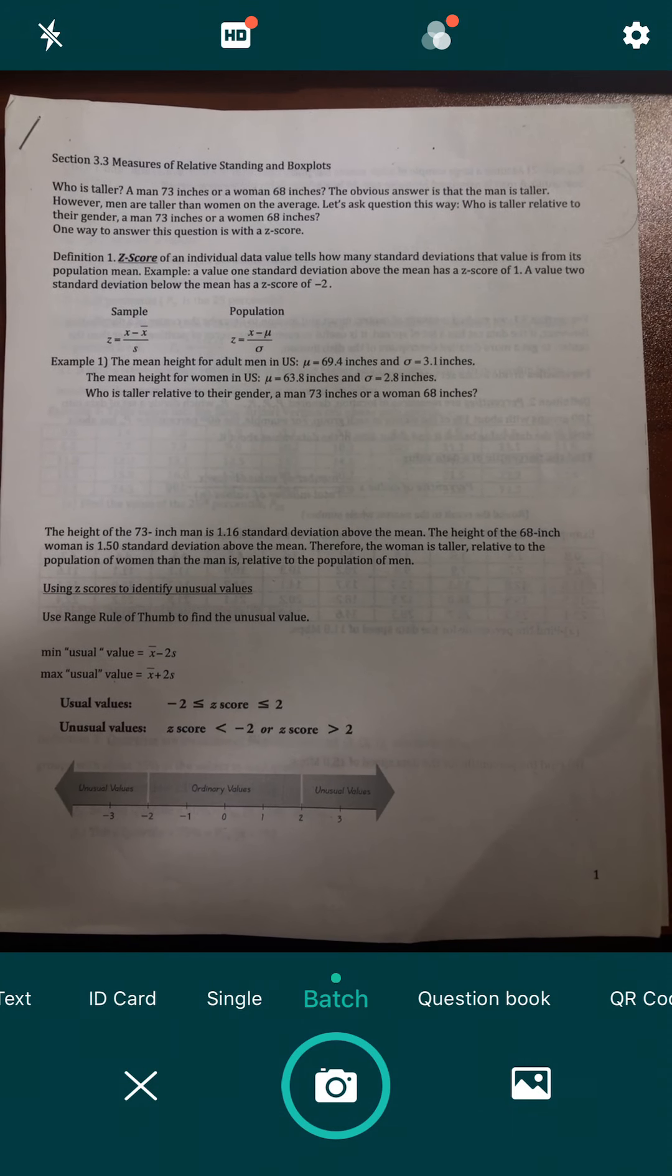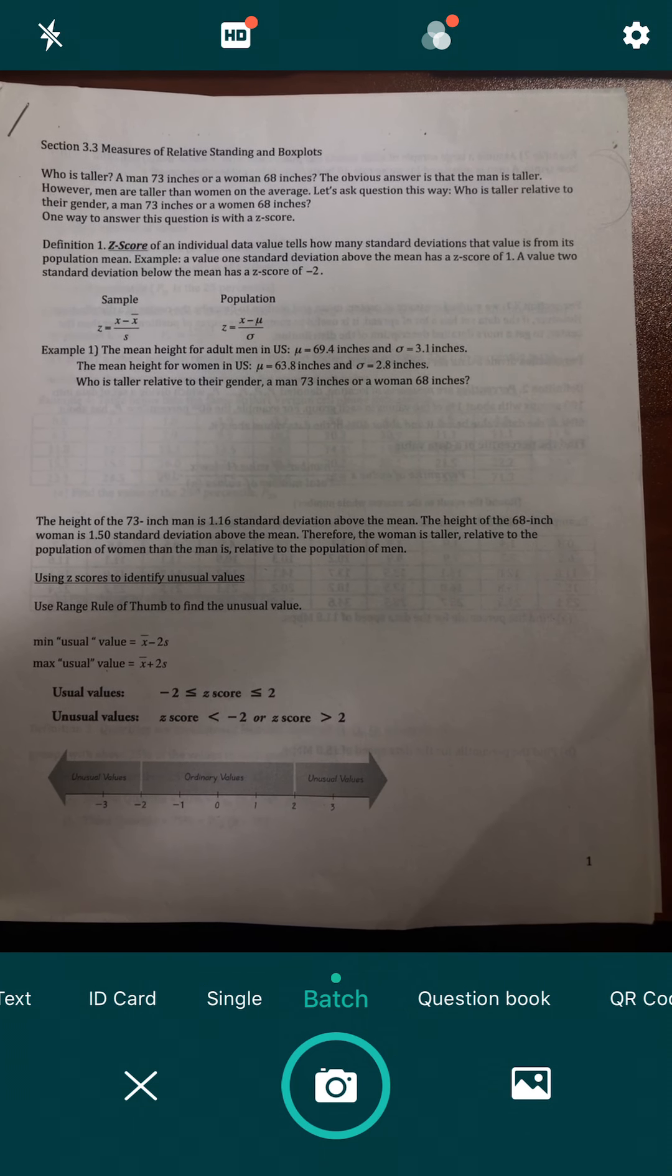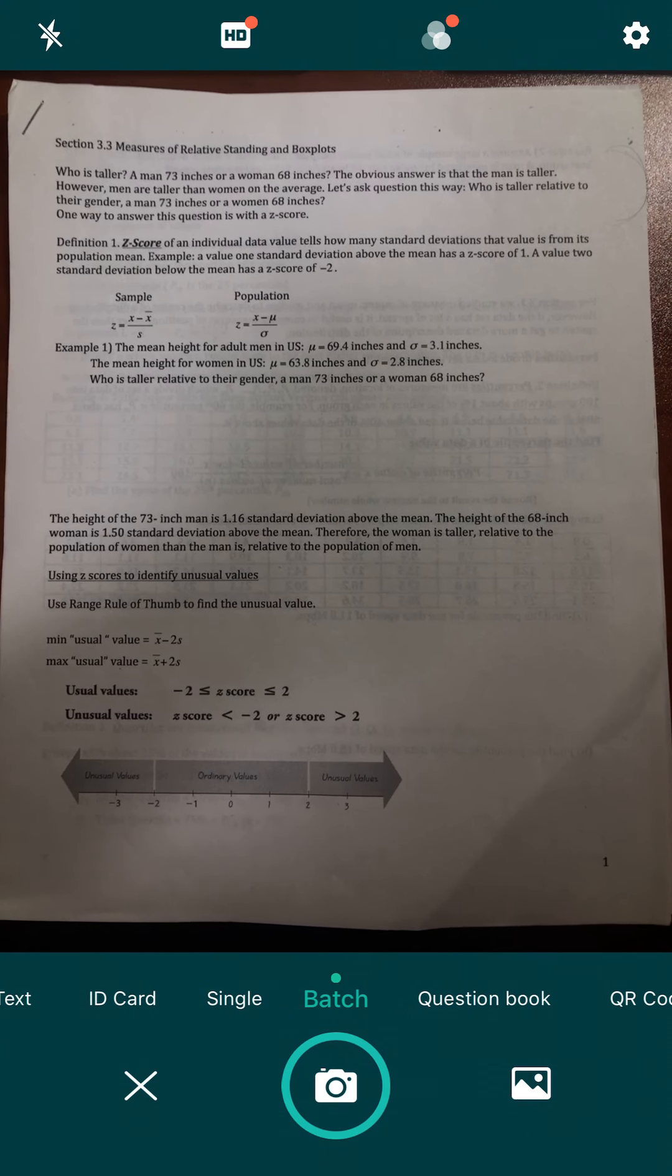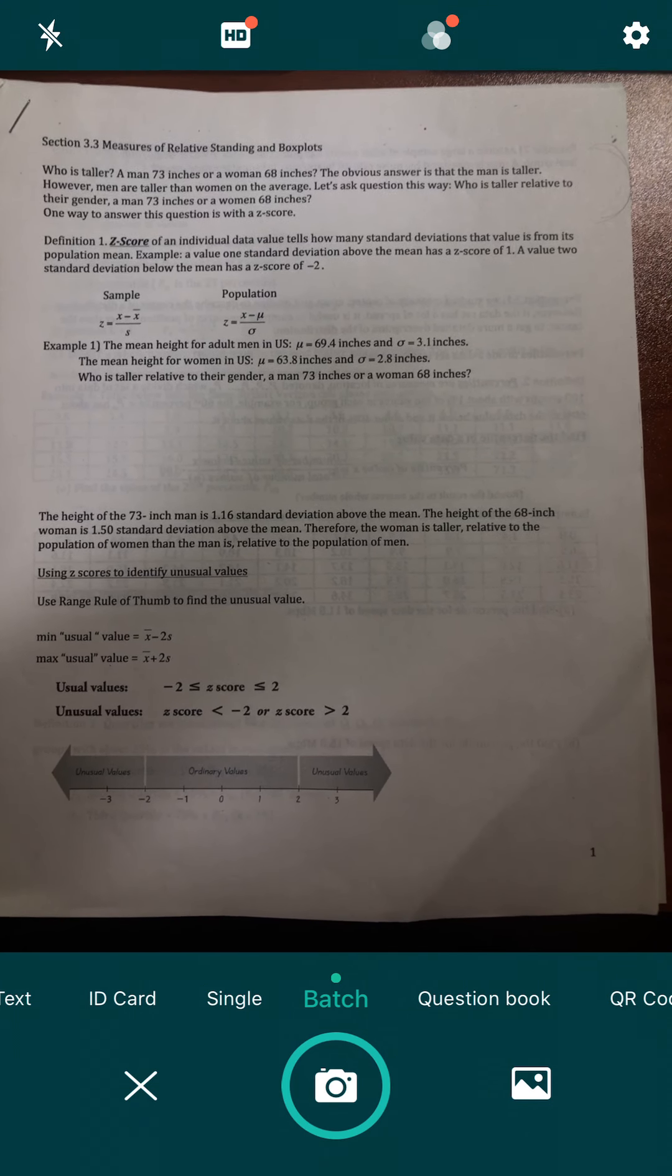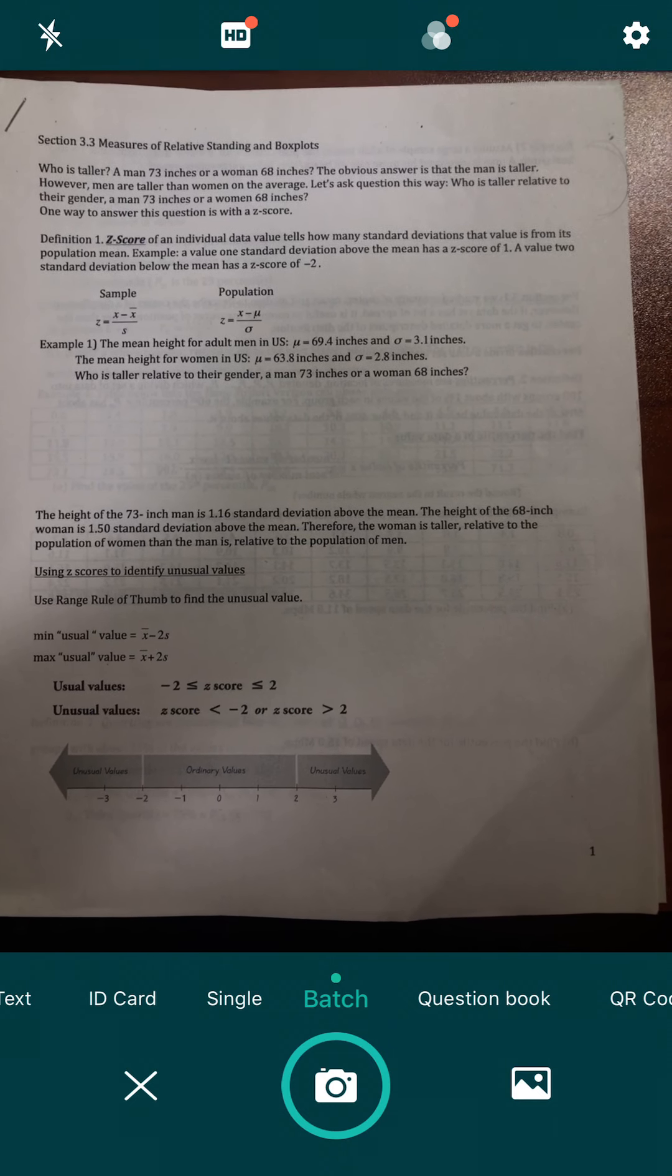Position your device over the document so that you can see it on your screen. When you have it nicely positioned, tap the right circle at the bottom.